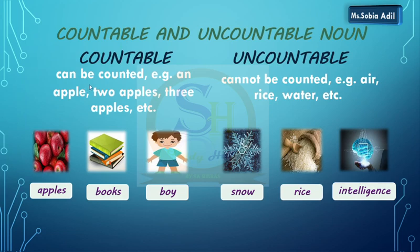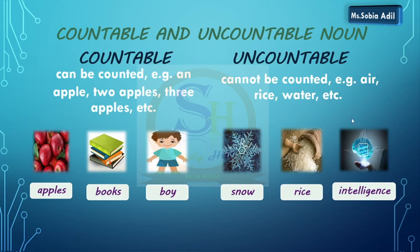Countable and uncountable nouns. Countable nouns can be counted — for example, an apple, two apples, three apples. Books are countable. One boy, two boys, three boys — those are countable. But some things cannot be counted — for example, snow, rice, intelligence. Uncountable nouns cannot be counted — for example, air, rice, water. Aap in cheezohn ko count nahi kar sakte — it's impossible. You cannot count intelligence either. This is the difference between countable and uncountable nouns.